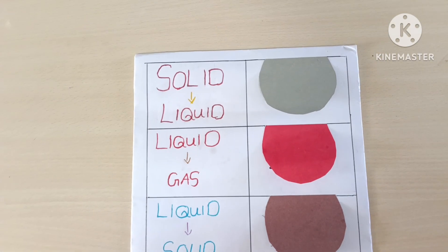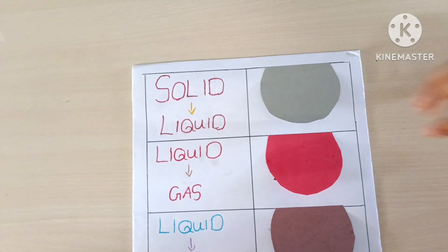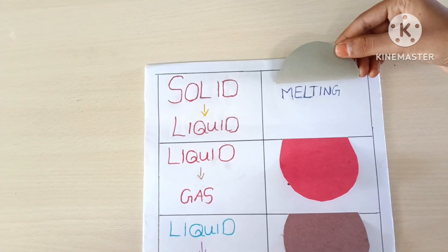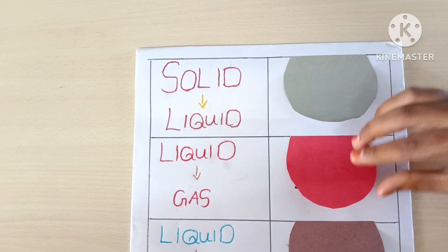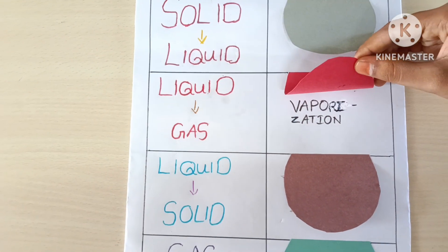Conversion of matter from solid state to liquid state is called melting. Conversion of matter from liquid to gas is called vaporization.